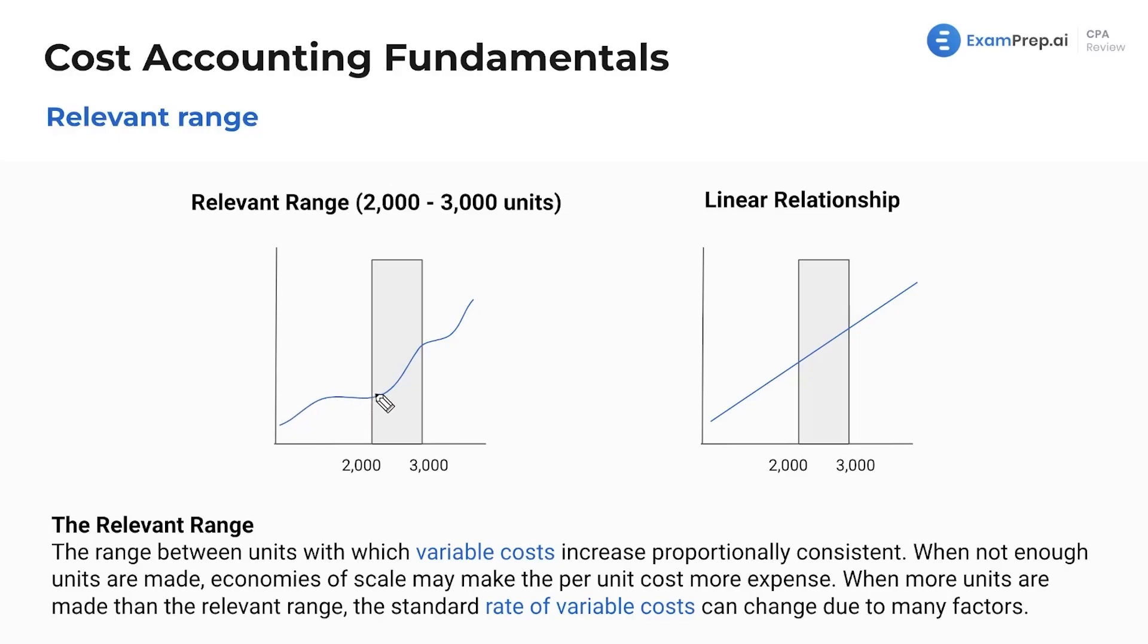Now under the relevant range, they increase proportional to the amount of units you produce. So this is cost over here on the y-axis. This is units produced.